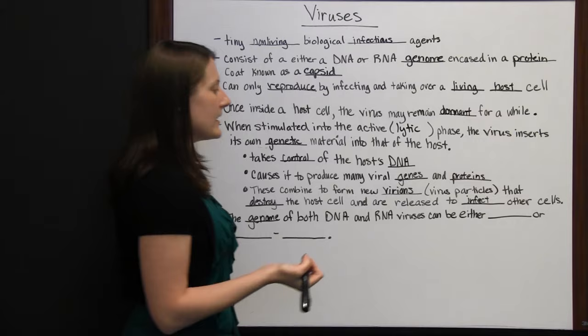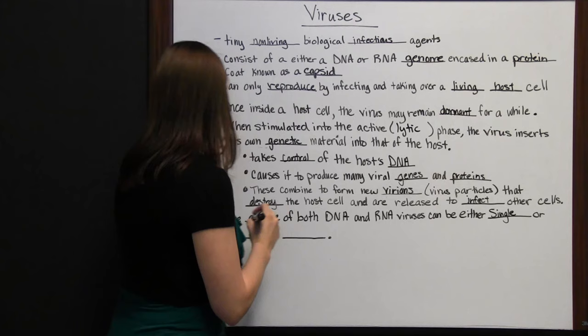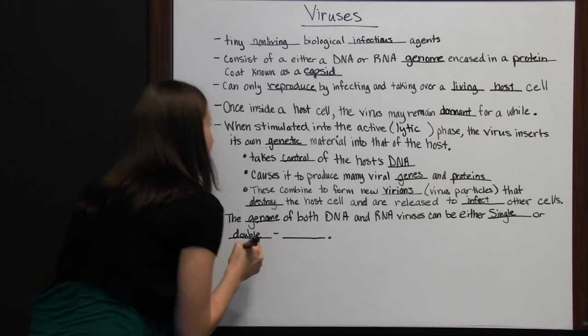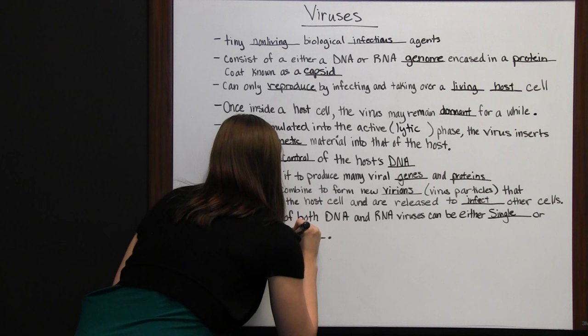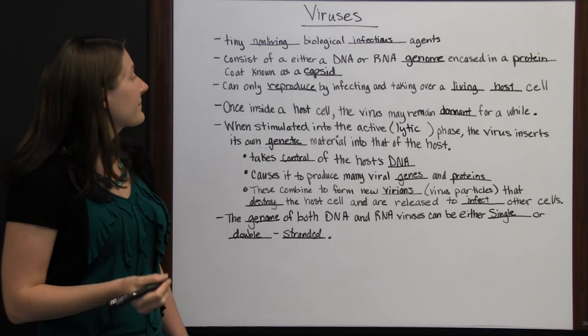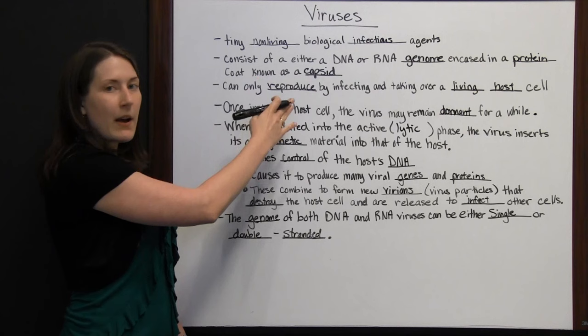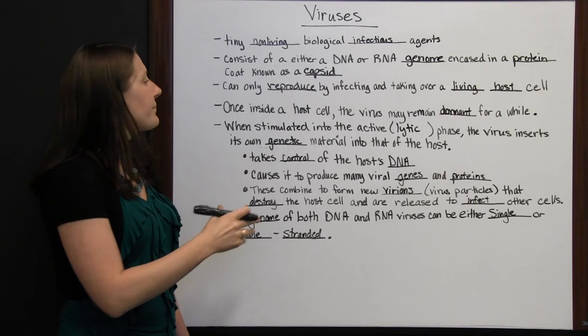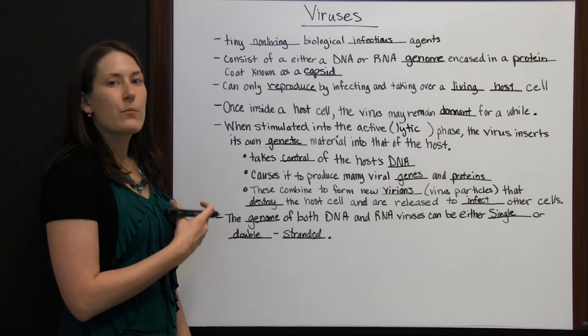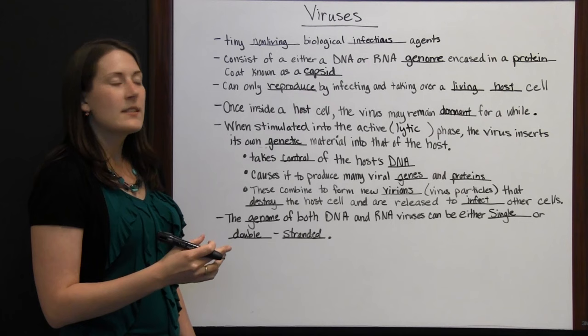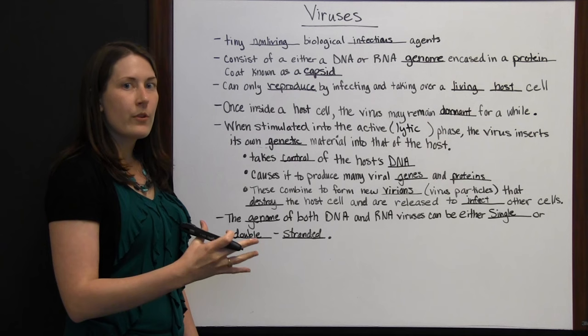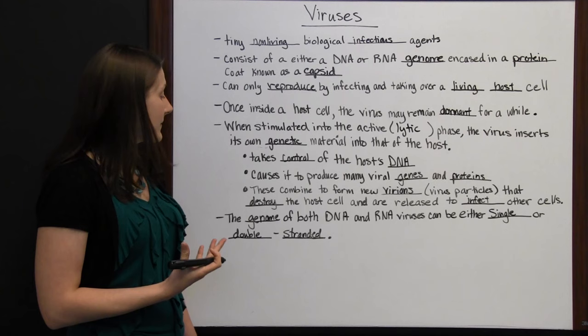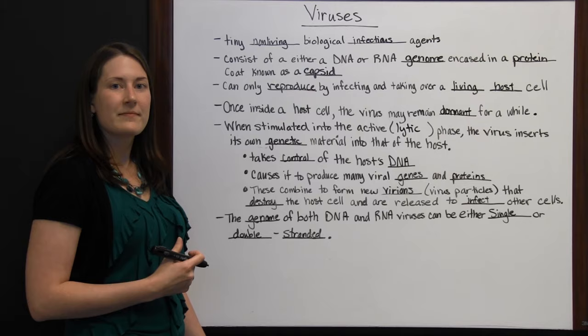The genome of both DNA and RNA viruses can be either single or double-stranded. A virus genome is typically only 3 to 100 genes — not very complex. Viruses are protected by their capsid, insert their genome into a host cell, take over, reproduce more viral genes and proteins, forming so many virions that the cell bursts and sends more viruses to attack other cells.